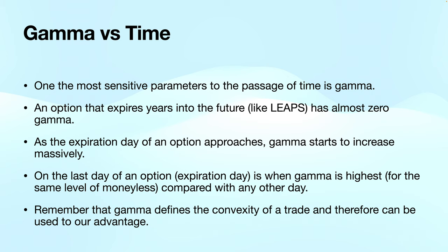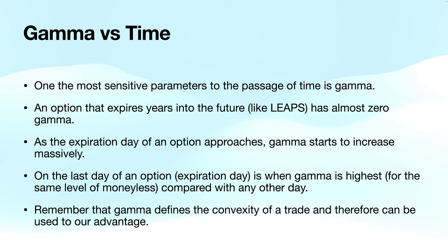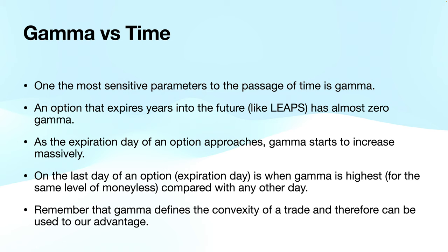Gamma changes with time in the following way: options that expire really far away — like LEAPS, an option expiring two years from now — have almost no gamma, so there is very little optionality. As you pick options expiring closer and closer — a few months, a few weeks — gamma for the same moneyness starts to increase massively. In the last day, the zero DTE day, gamma is gigantic — probably the highest value for the same moneyness compared to any other day.